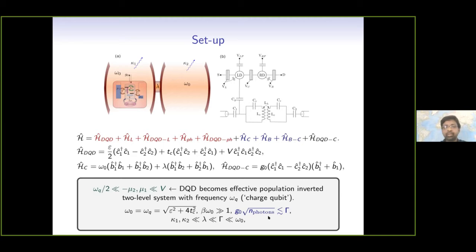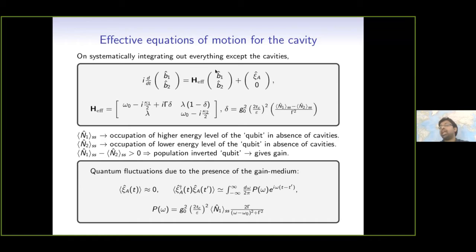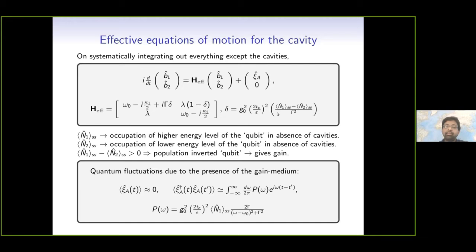Given this setup, we systematically integrate out everything except the cavities and end up with these operator equations of motion — not expectation values, so all other quantities can be calculated from here. Here we have our effective non-Hermitian Hamiltonian, microscopically derived for this setup. There are the usual losses, and here we have a gain term in delta. N1SS is the higher level of the qubit and N2SS is the lower level. When the qubit is population-inverted, this is positive and gives the gain. This is also non-Hermitian because the off-diagonal elements are not the same; however, in our choice of parameters, delta is actually much smaller than one, though we have kept it in all calculations.